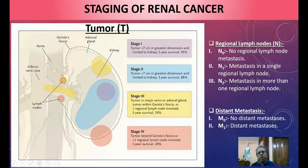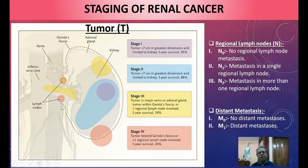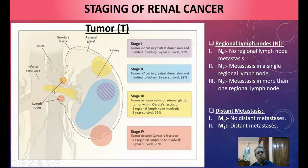In Stage IV, the tumor extends beyond Gerota's fascia, or regional lymph nodes are more than 1 cm in size. Prognosis is very poor — only 20% five-year survival. Survival depends on regional lymph node involvement and Gerota's fascia status. If Gerota's fascia is breached or lymph nodes are enlarged beyond 1 cm, the disease is advanced with a poor prognosis.